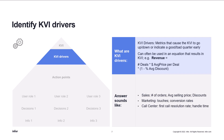Some other examples: for sales, it's number of orders, average selling price, and discount. For marketing, it's touches and conversion rate — touches meaning customer interactions. For a call center dashboard, the drivers could be first call resolution rates and handle time.